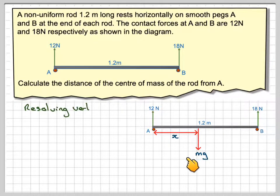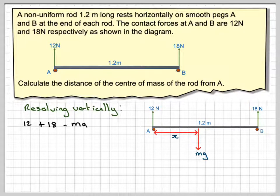Right, if we now resolve vertically this way, then we've got 12 plus 18 going upwards and then going downwards we've got mg. That will give that mg is equal to 30 newtons.